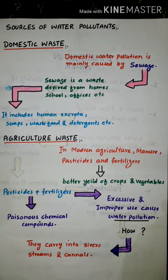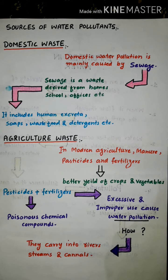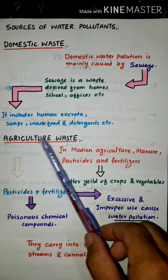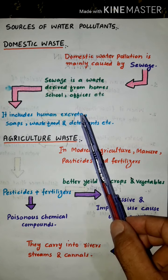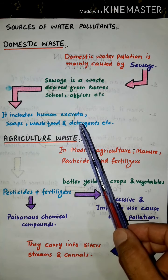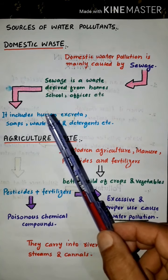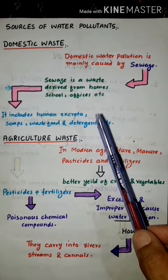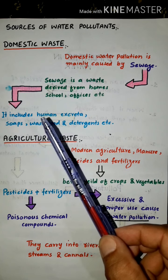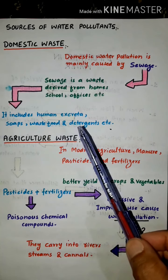Domestic water pollution is mainly caused by sewage. Sewage is waste derived from homes, schools, and offices. Sewage includes human waste, waste food, and detergents.